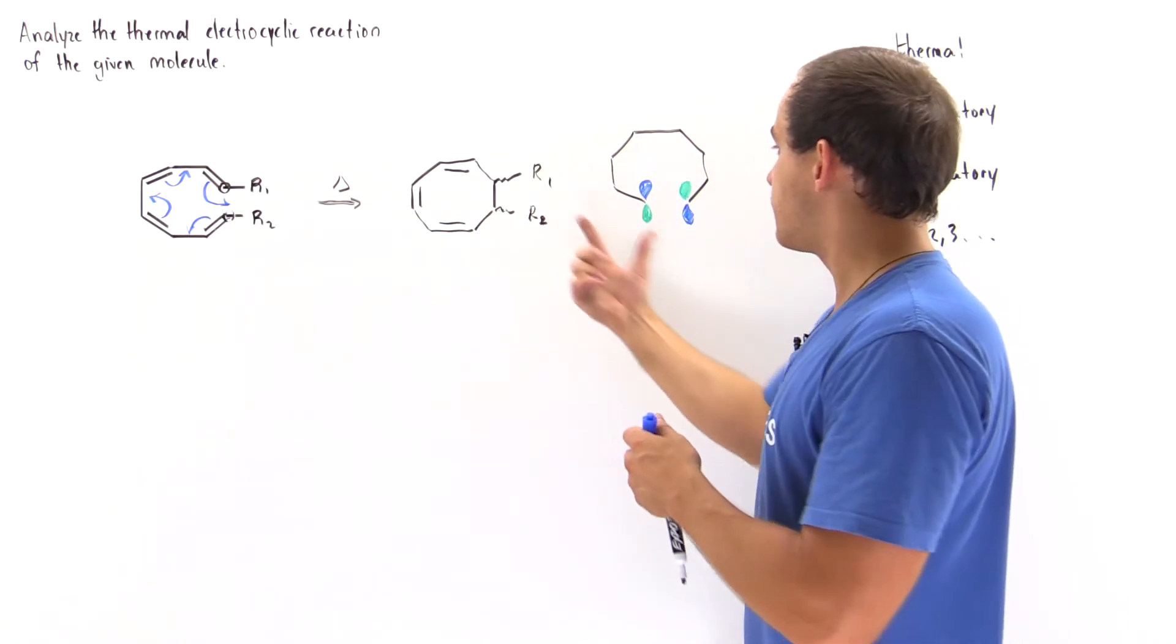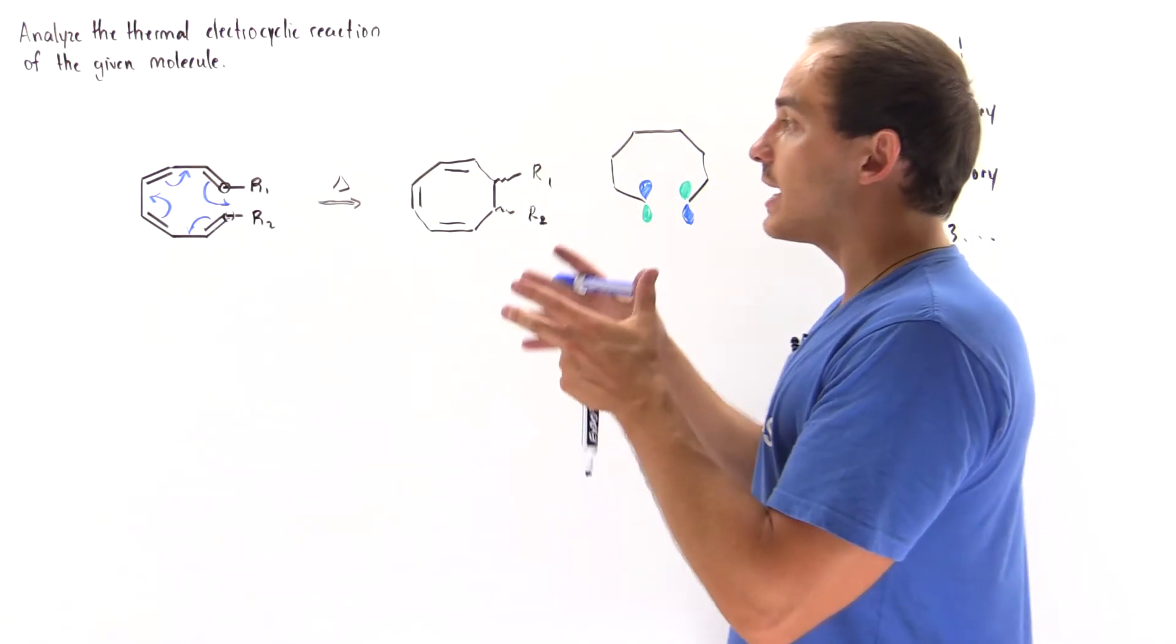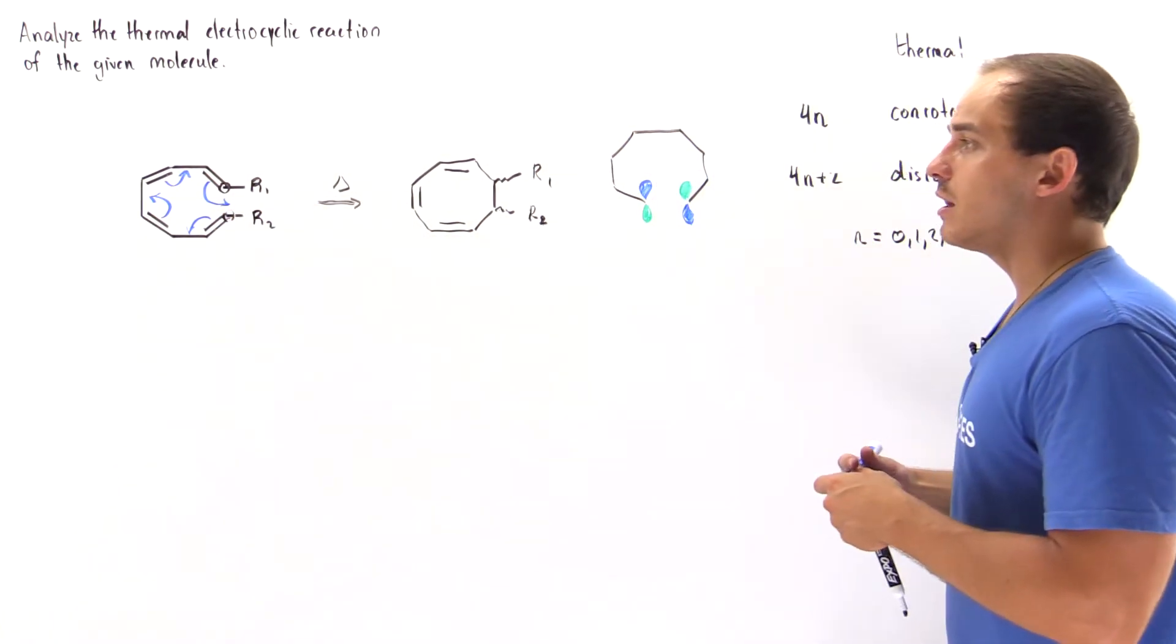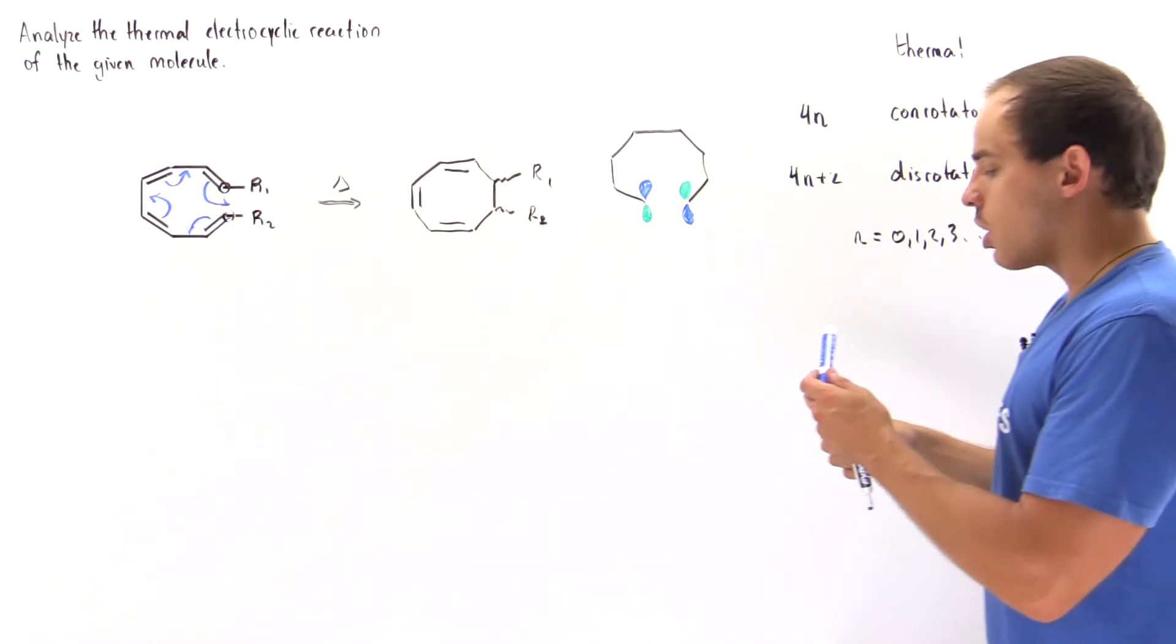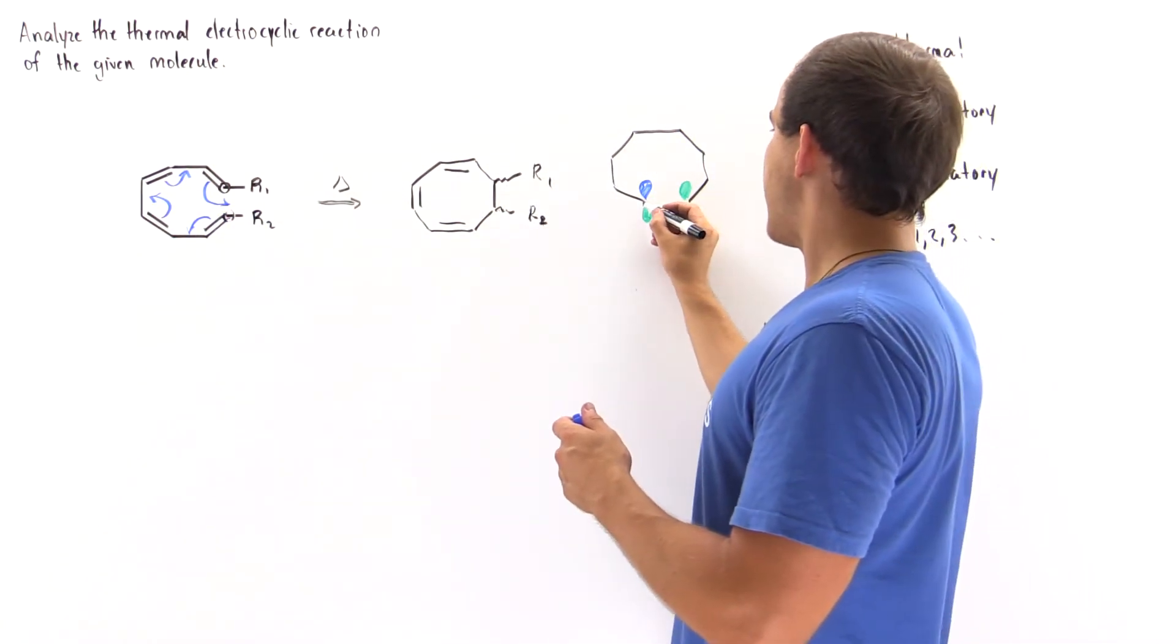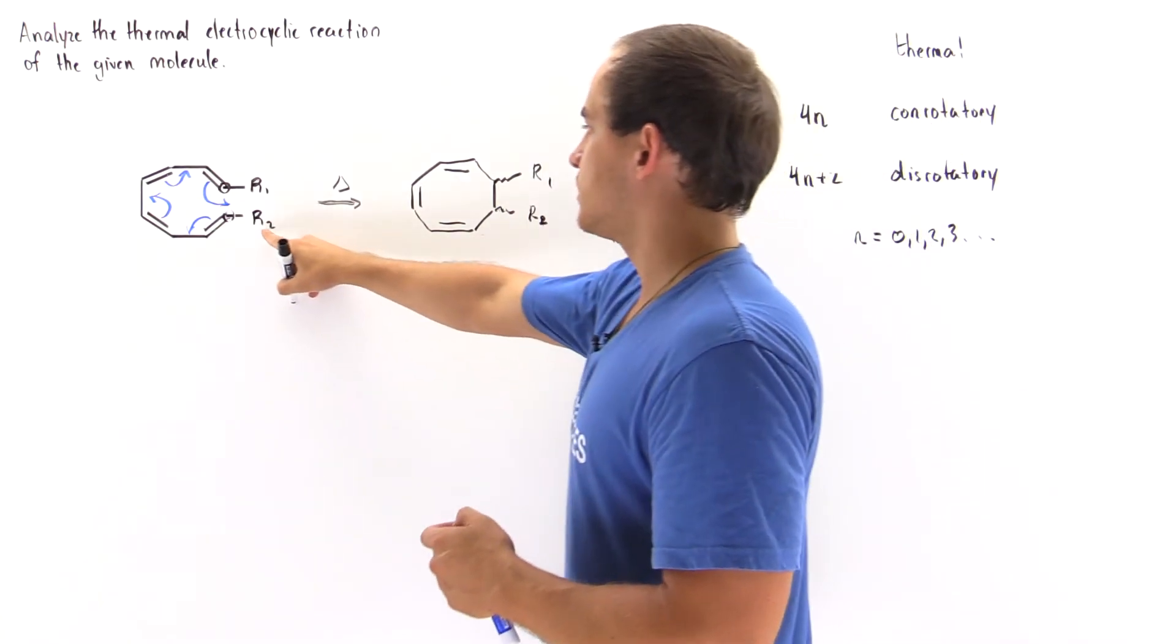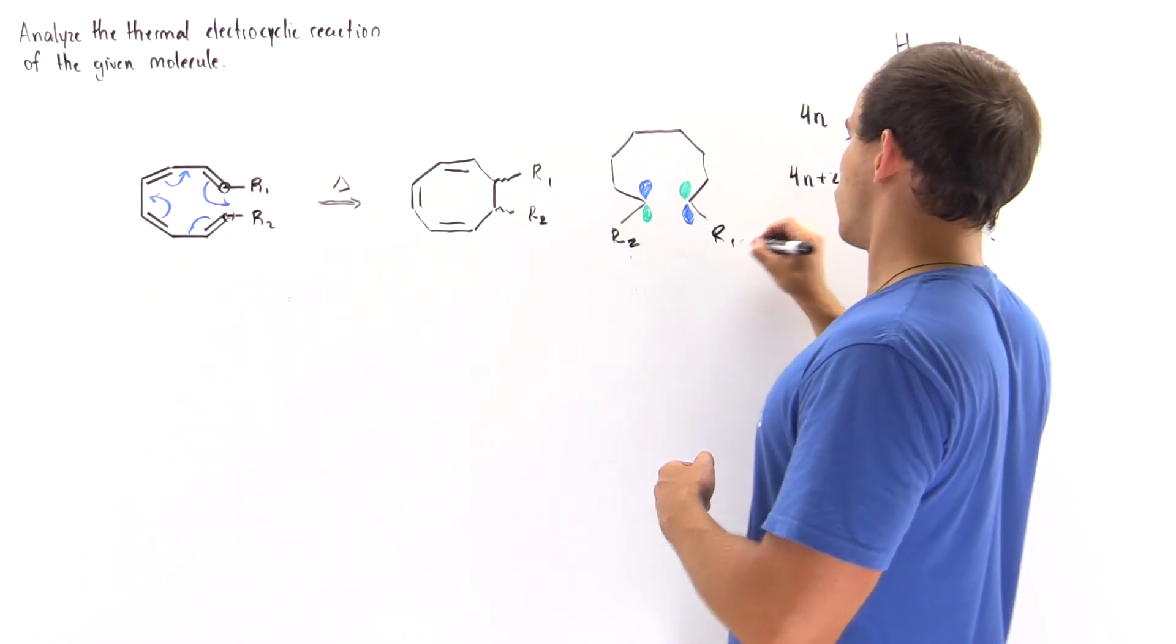If you're not certain about where to get this, simply work out all the pi molecular orbitals of this particular molecule by combining the 2p orbitals of the carbons. So we have an R group pointing this way, let's call it R2, and this points this way, let's call this R1.